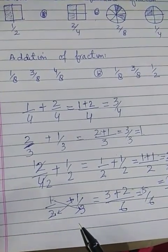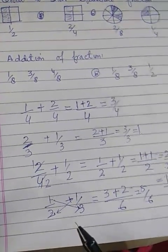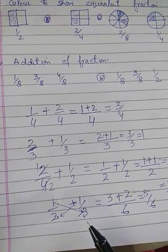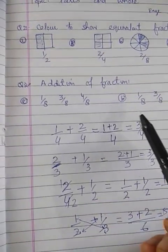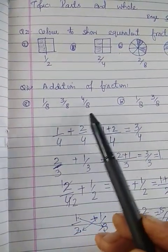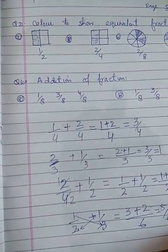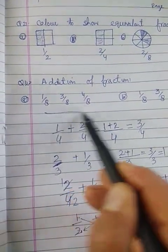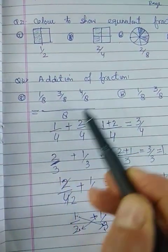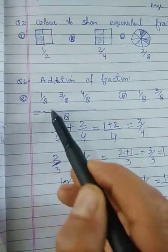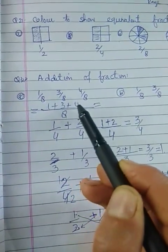If we have two or more fractions and the denominators are different, we need to make them the same. Look at page 56. For example, if we have fractions with denominators 1, 8, and we need to add them: 1 plus 3 plus 4 equals 8 divided by 8.